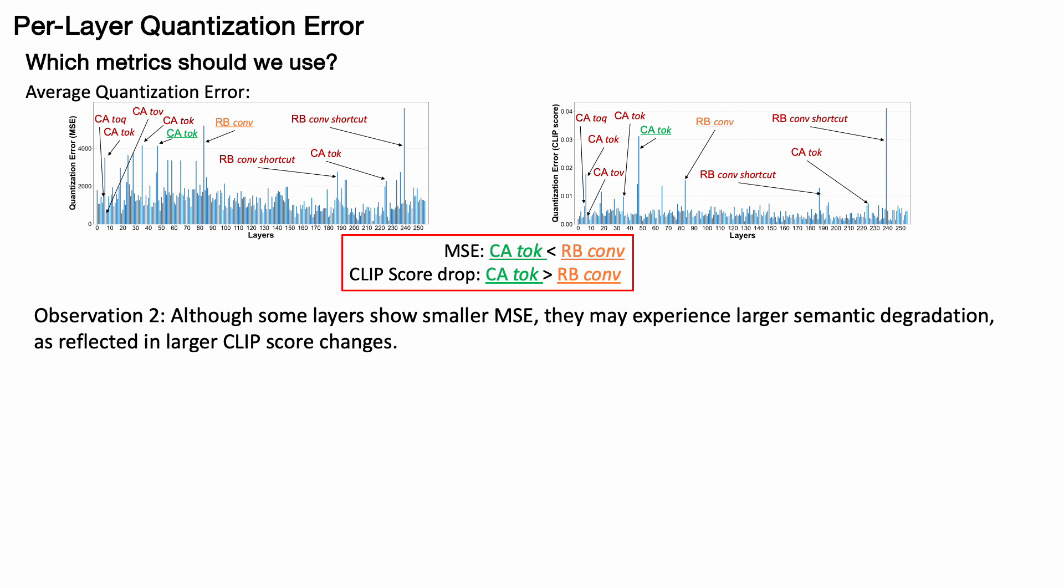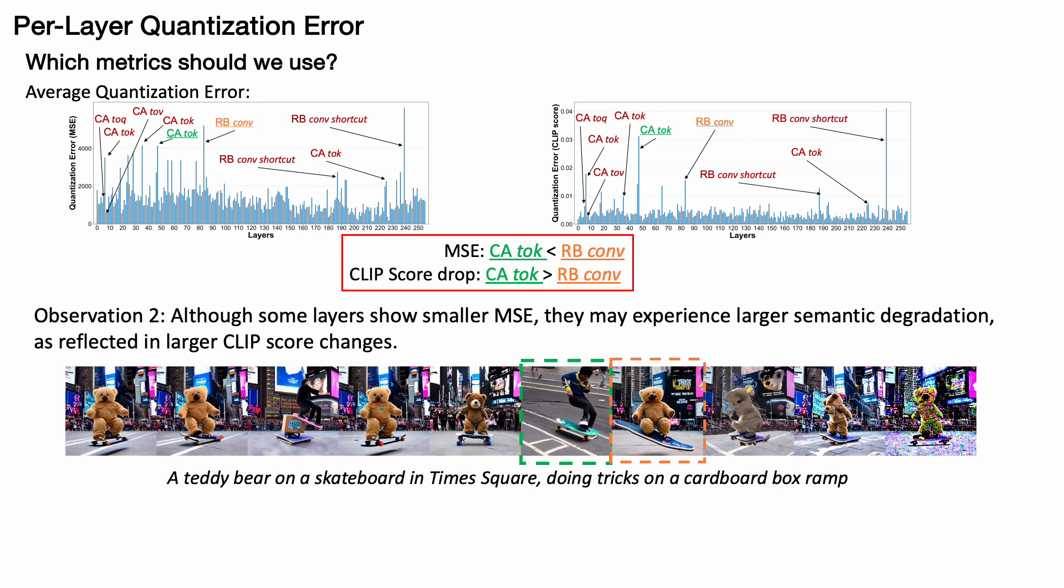Next, let's examine the clip score. We observe that while some layers may exhibit smaller MSE values, they can still undergo significant semantic degradation, as reflected by larger changes in the clip score. Let's see the top figures. When comparing the one-bit MSE and the drop in clip score, the cross-attention key layers show higher MSE values, but a smaller drop in clip score compared to the convolutional layers in the residual blocks.